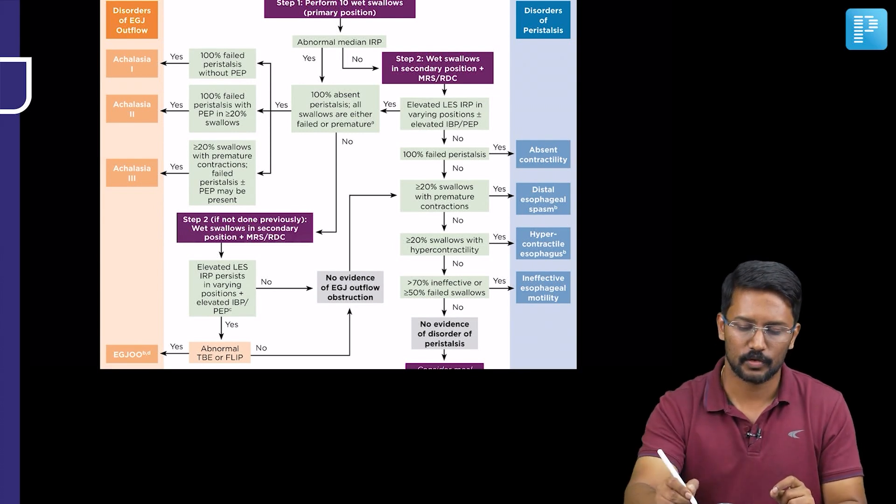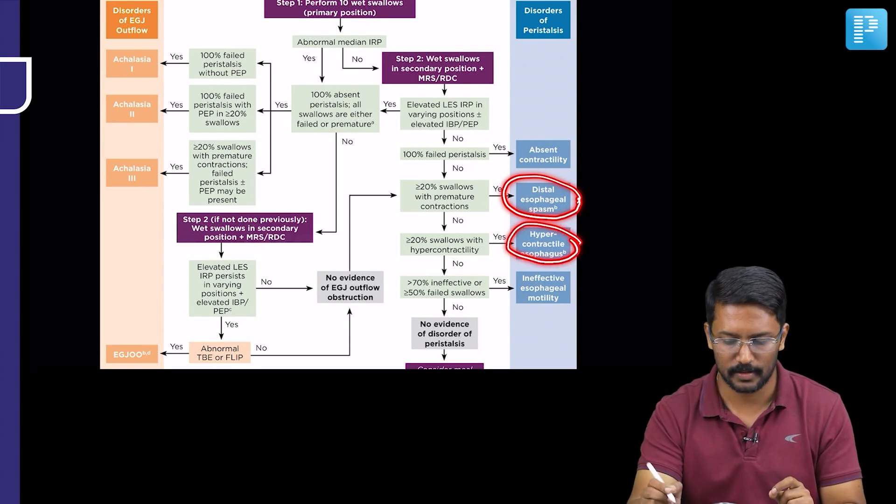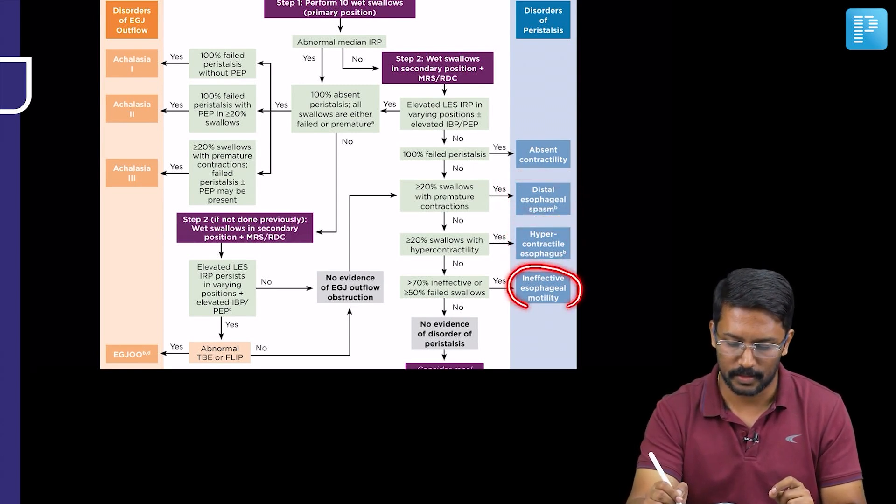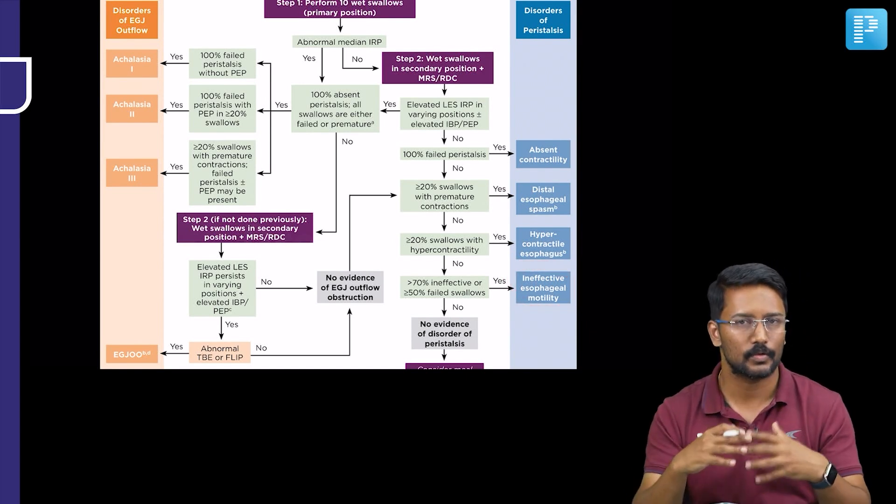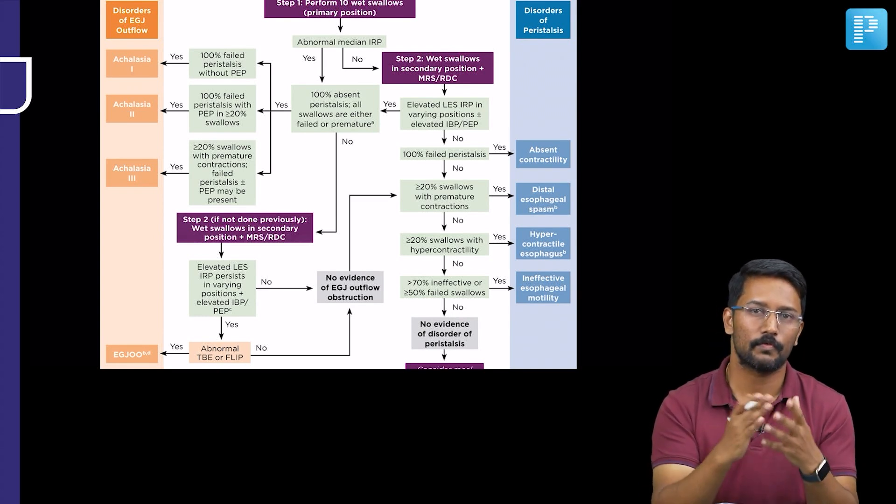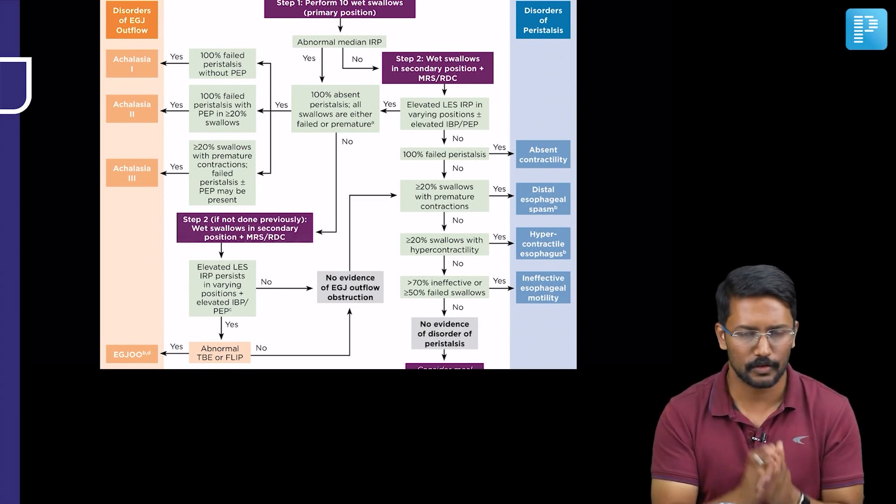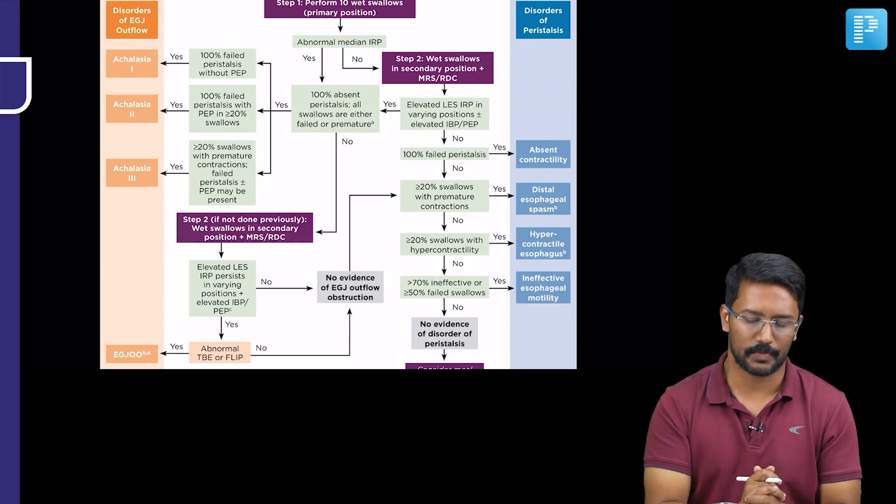So peristaltic disorders include diffuse esophageal spasm or hypercontractile esophagus, ineffective esophageal motility and the nutcracker esophagus. So that I have discussed in detail in the MCQ discussion videos for esophageal motility disorder as well as the theory. So please go through that for further understanding. I hope you have the understanding of Chicago classification.